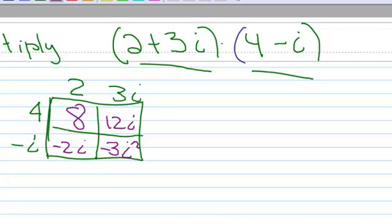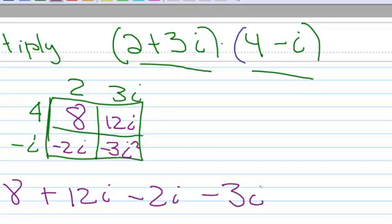So now I have an 8, and I have a plus 12i minus 2i minus 3i squared. You would get the same thing from foiling. First, outsides, insides, and last.